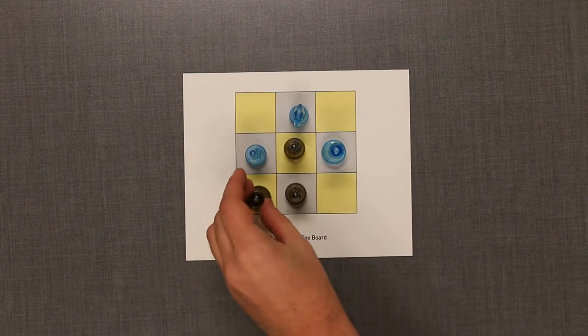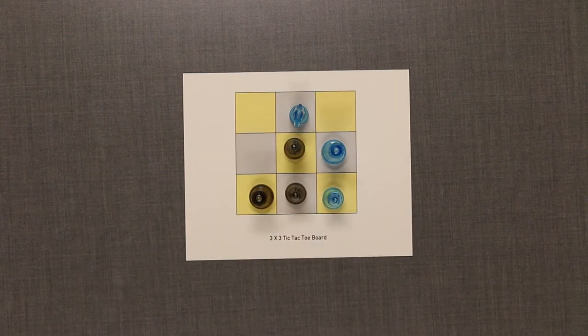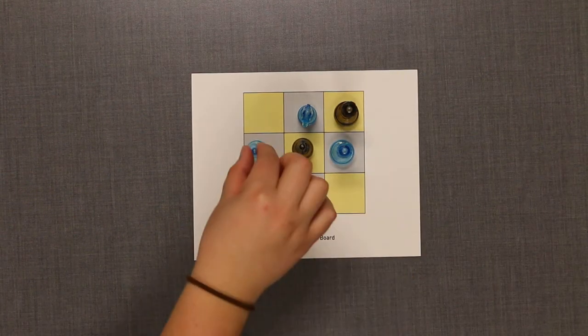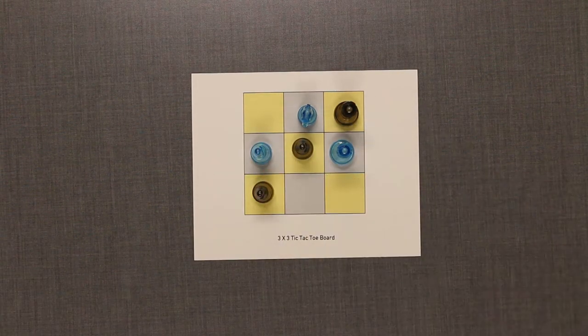If no one has won on your turn, move one of your game pieces to a spot that you think will help you get three in a row. Alternate turns and continue until one player gets three in a row to win.